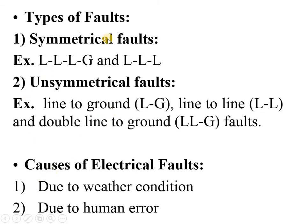After the types of fault, we look at the causes. Due to weather conditions such as earthquake, tsunami, storm, or wind, there can be damage to the transmission tower, leading to electrical faults. The second cause is human error — for example, incorrect settings of the protective relay can also lead to faults.